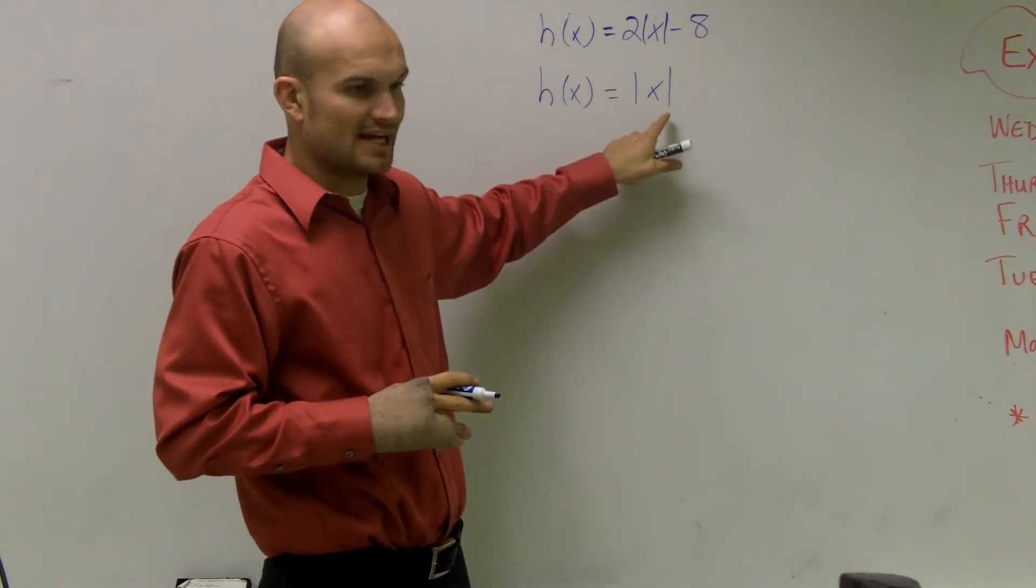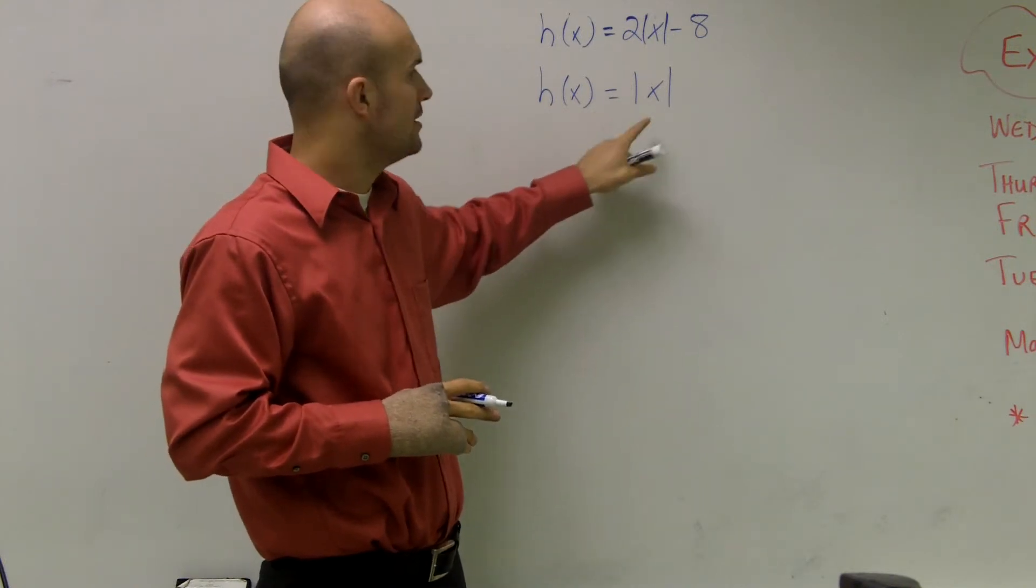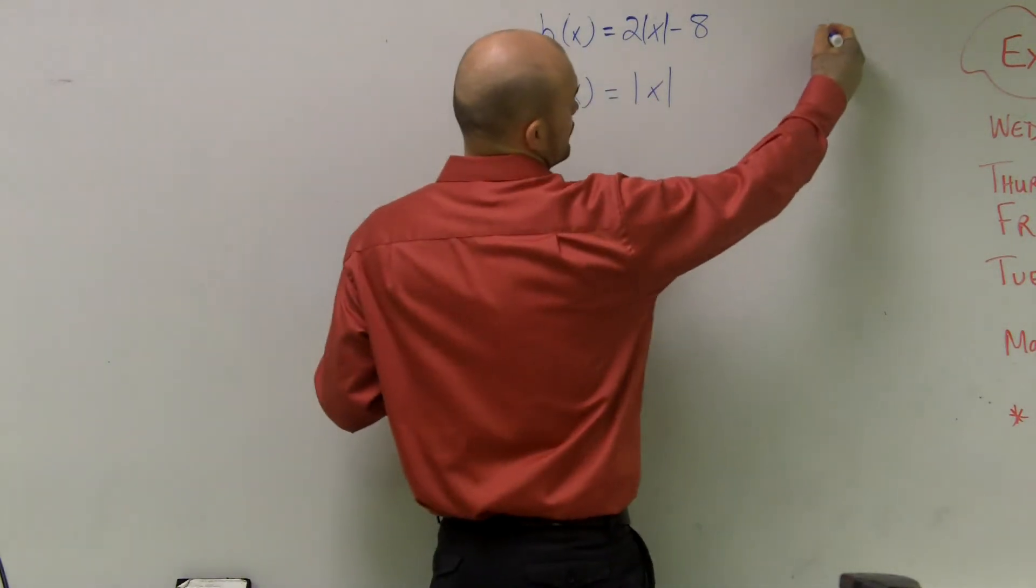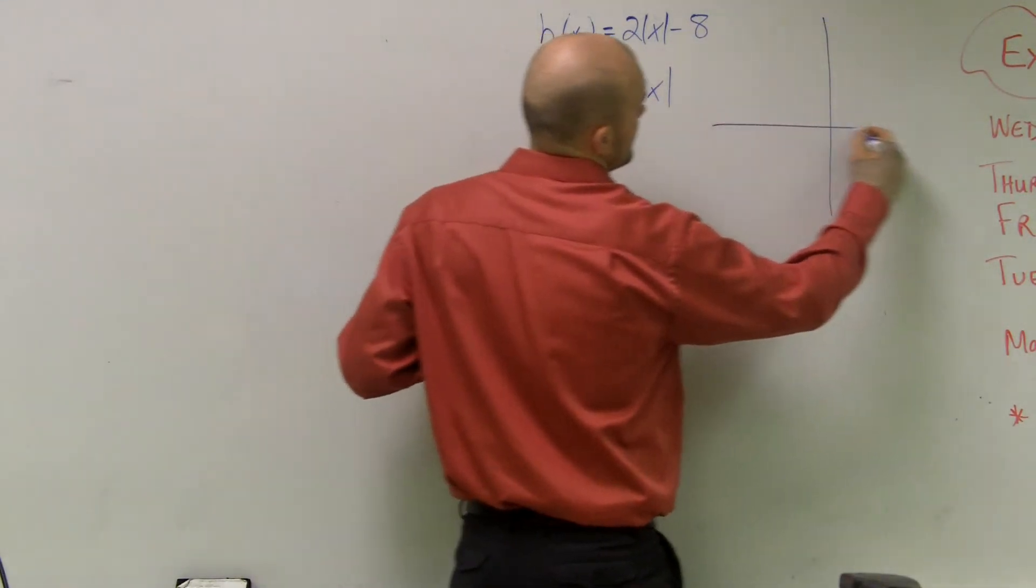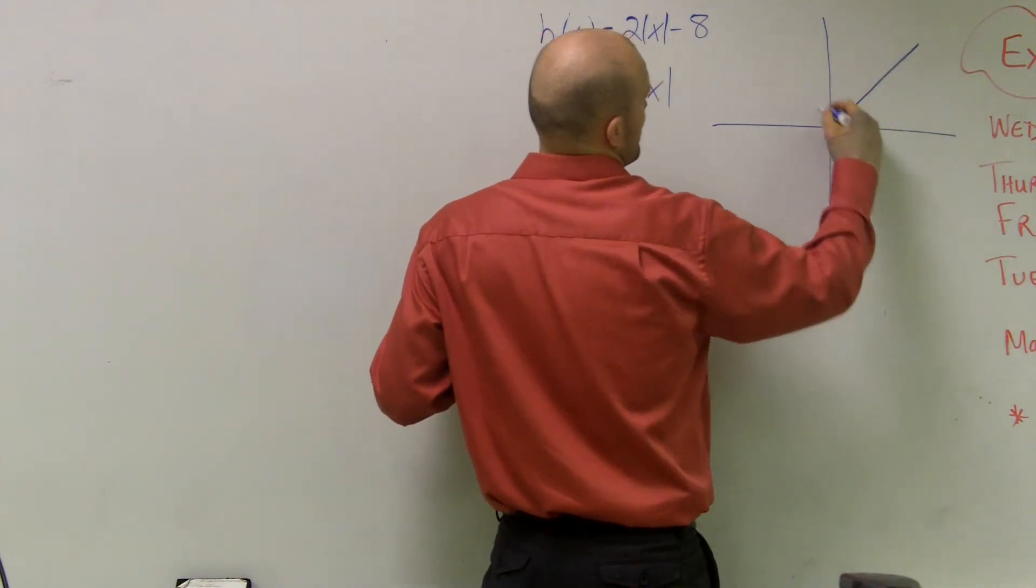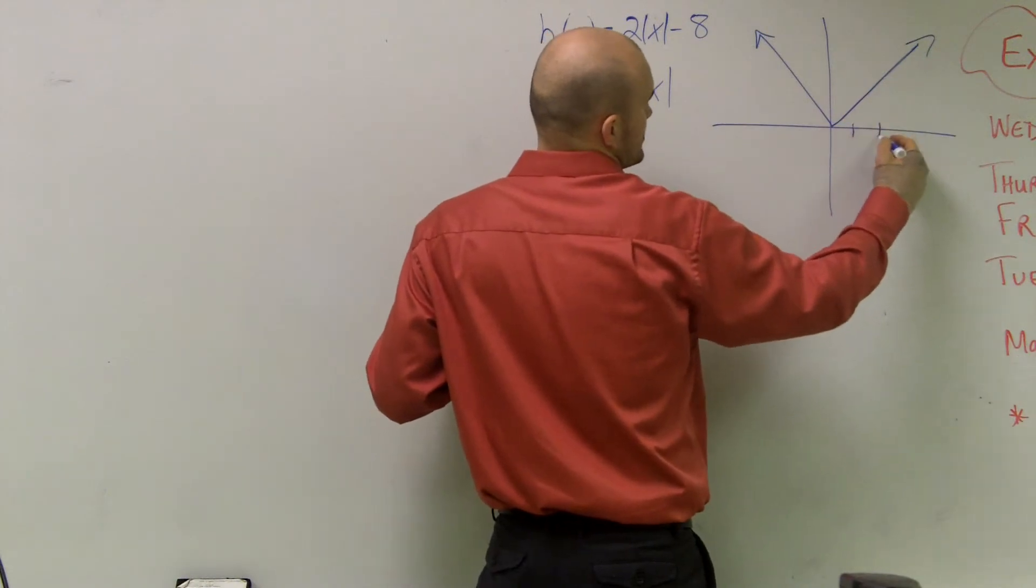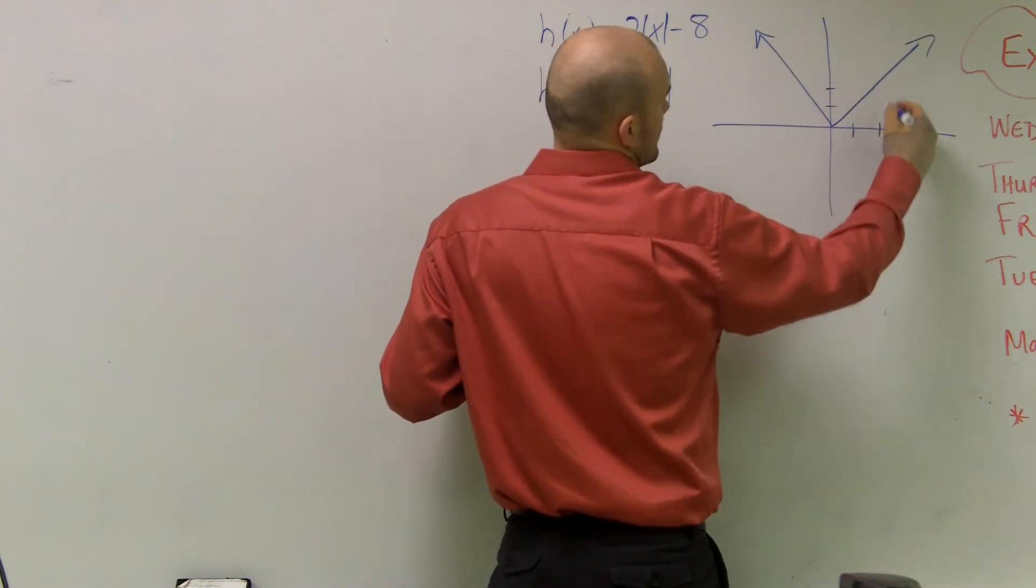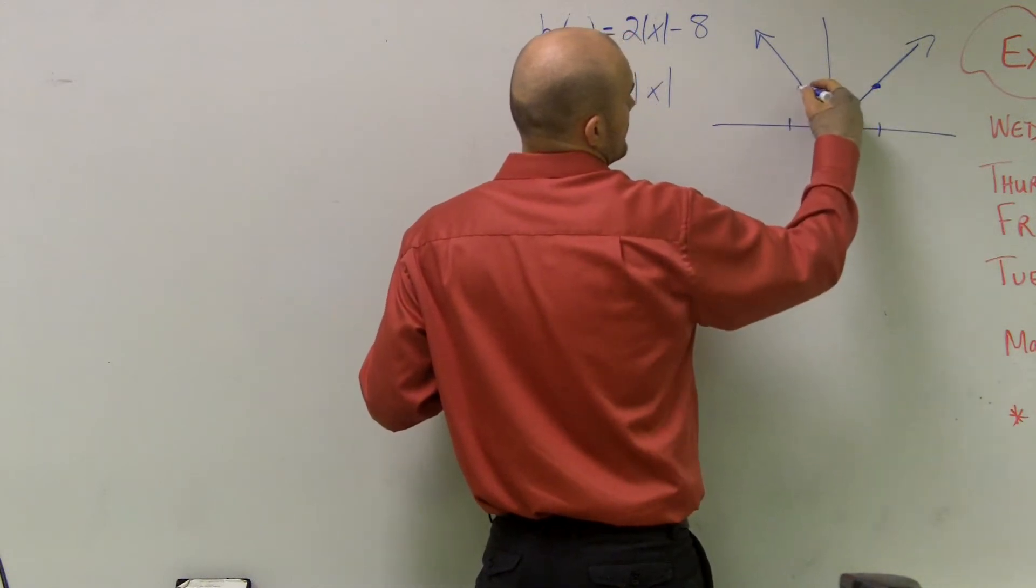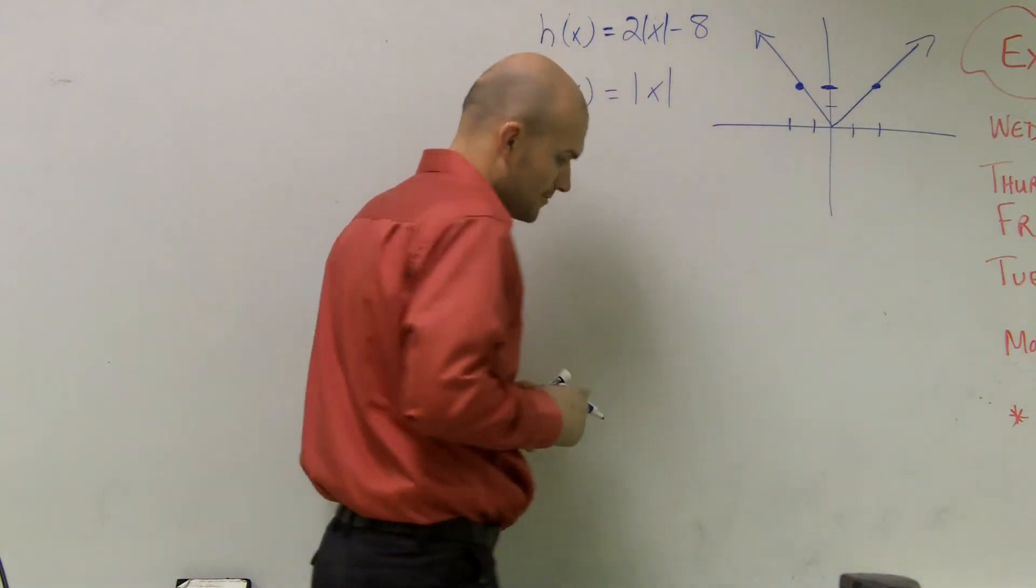So if I plugged in negative 2, the absolute value of negative 2 is going to give me an output of 2. If I put in positive 2, my output is going to be 2. So my graph is going to look like this, where if I go positive 2, it gives me an output of 2, and negative 2 gives me an output of 2.